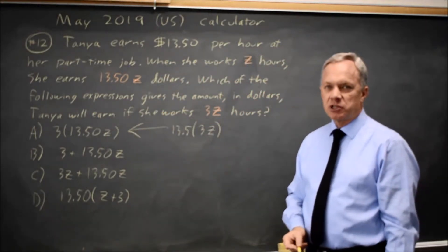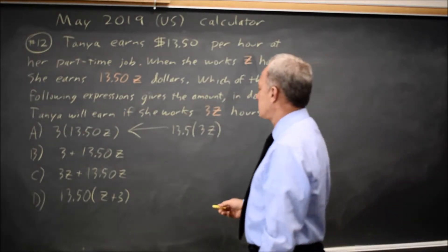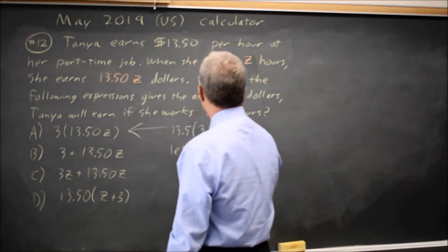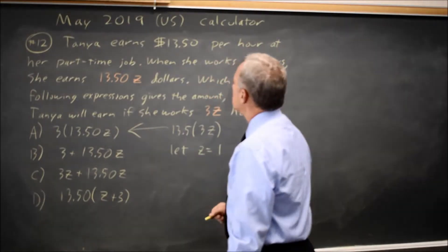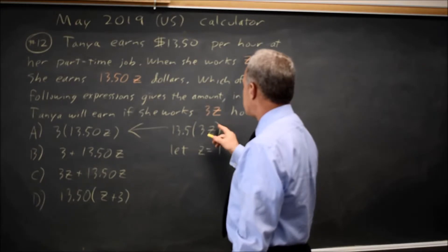Alternatively, you can choose a particular value for Z. If we choose Z equals 1, then for 3Z hours,